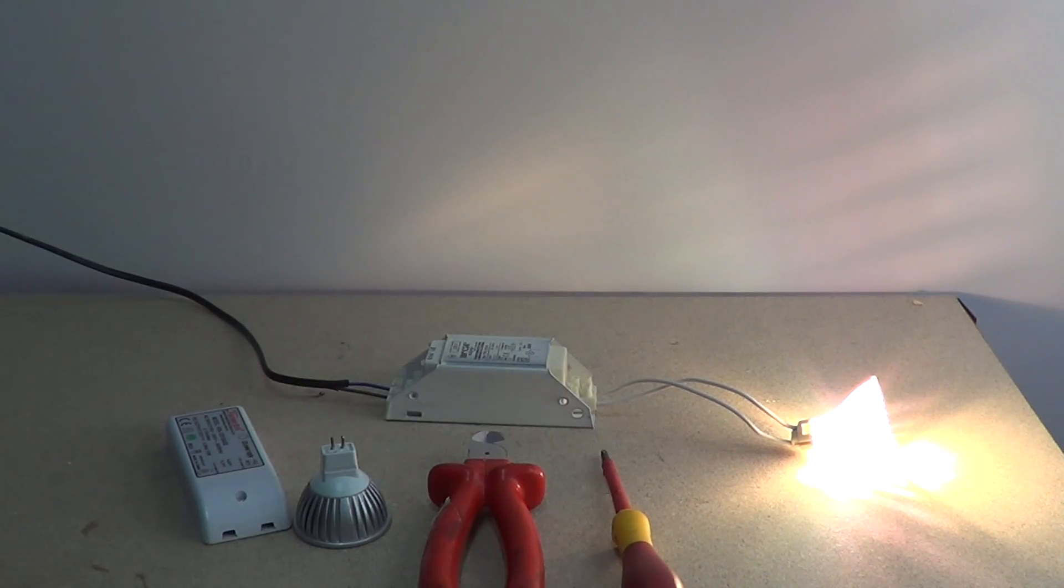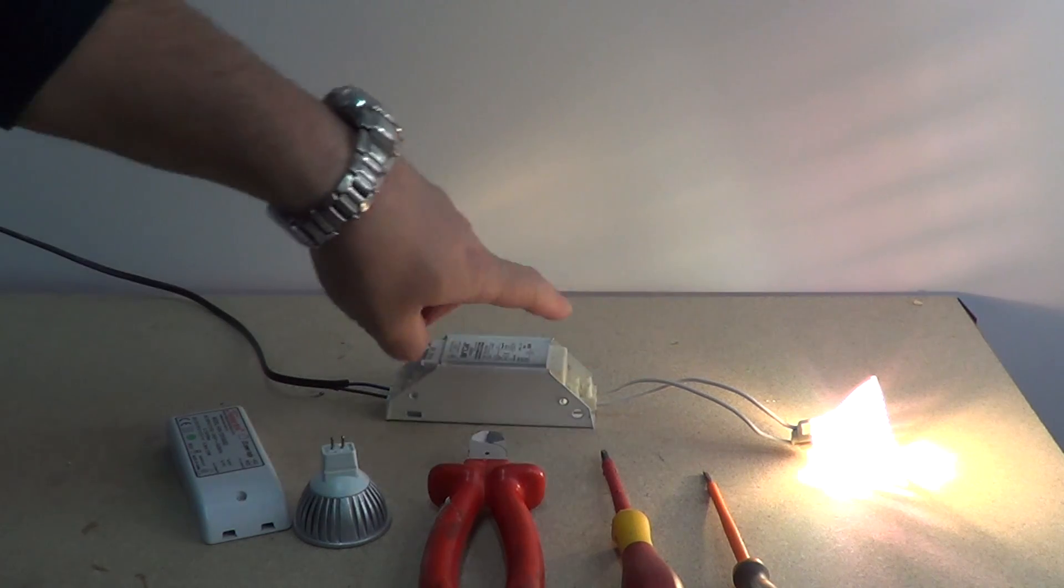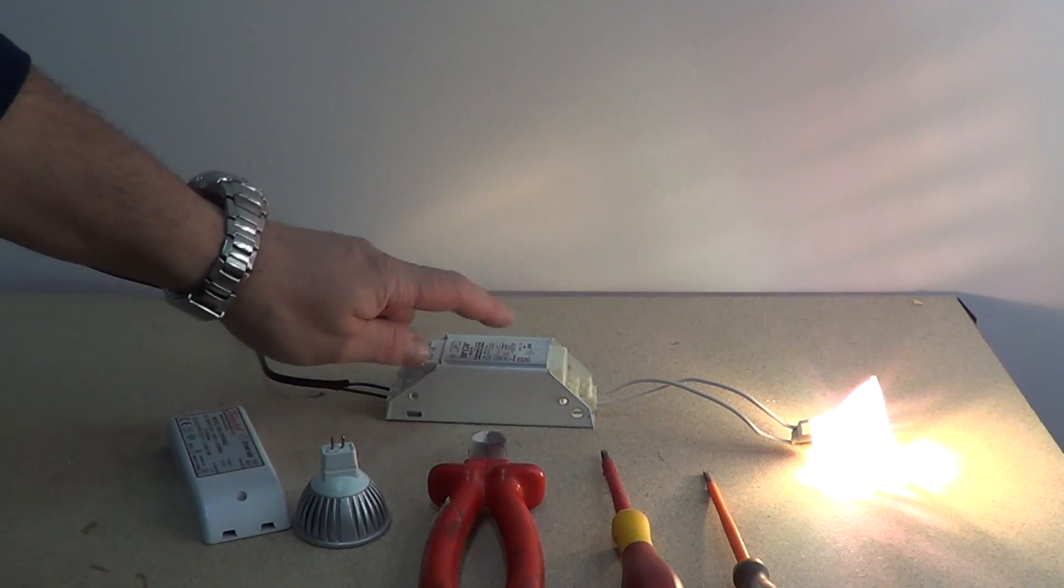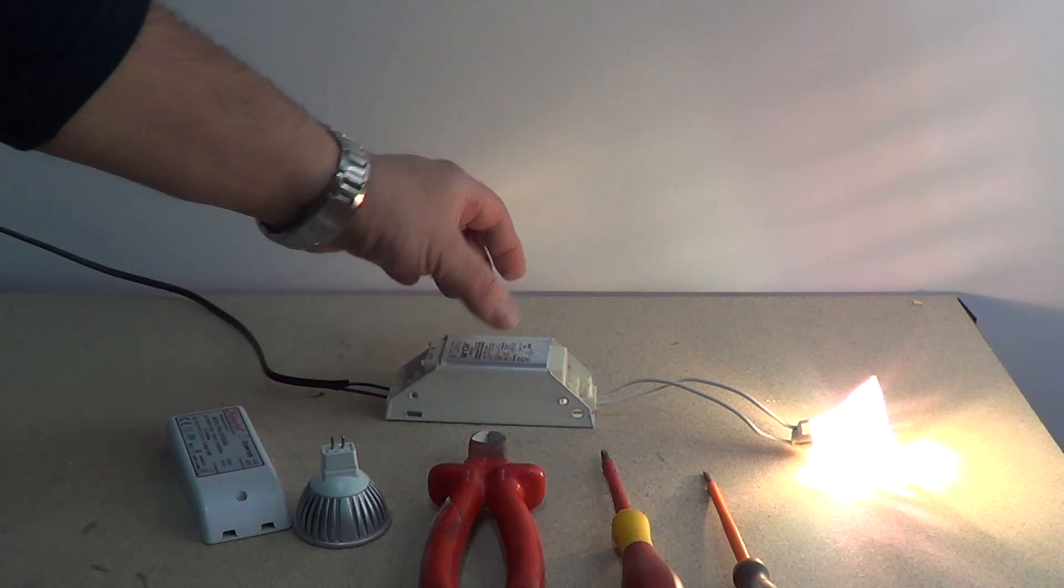The transformer is normally above the ceiling and it is connected via the cable to the bulb. The tools you need are a pair of snips, a star head screwdriver and a flat head screwdriver.